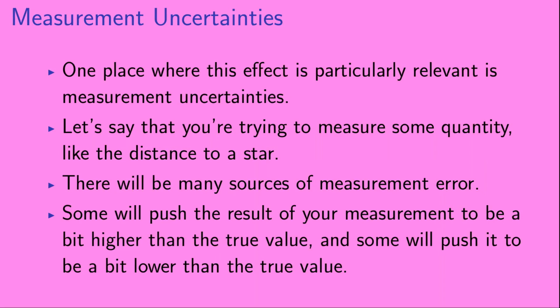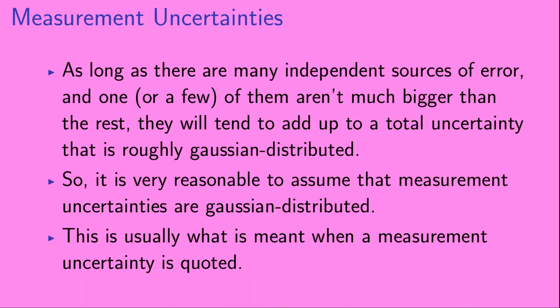Now, one place where this effect is particularly relevant is measurement uncertainties. Let's say you're trying to measure some quantity, like the distance to a star. There will be many sources of measurement error. Some will push the result of your measurement to be a bit higher than the true value, and some will push it to be a bit lower than the true value. As long as there are many independent sources of error, and one or a few of them aren't much bigger than the rest, they will tend to add up to a total uncertainty that is roughly Gaussian distributed. So, it is very reasonable to assume that measurement uncertainties are Gaussian distributed. This is usually what is meant when a measurement uncertainty is quoted.